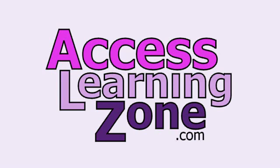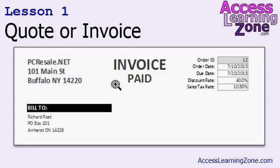Now let's take a closer look at exactly what's covered in today's class. In the last class, Access Expert 9, we developed a printable invoice that we could generate off of our order form. In today's class, we're going to add the ability to switch between an invoice and a quotation, and if it's an invoice, mark whether it's paid or unpaid and display that information right on top of the quote or invoice. In addition, we're going to take our company name — PCResale.net — and add that information to the system default table.